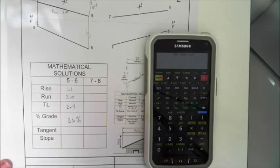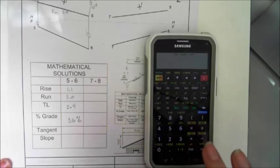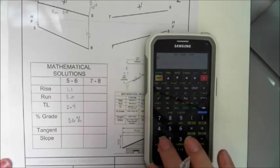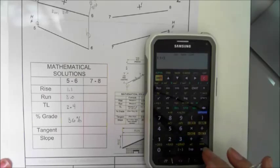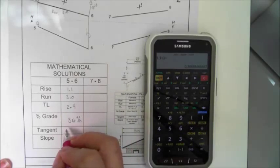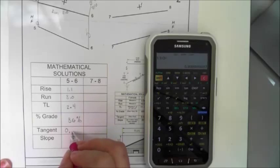Now we want to find our tangent. Our tangent is simply that rise over run, which we just did a second ago. So if we had been thinking, we wouldn't have to do this again, but that's what I get for not thinking ahead. So I know my tangent is 0.37.